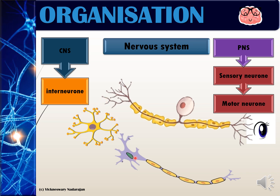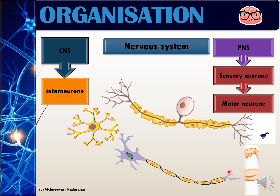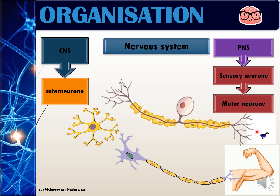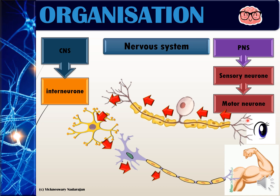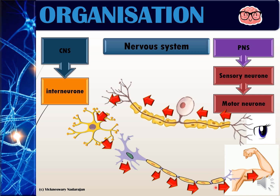Likewise, the motor neuron has dendrites closely connected to the interneuron, and on the axon terminal end it is connected to effector organs such as glands and muscles. How this works is that the eyes see a stimulus, an impulse is generated by the sensory neuron, transmitted across the interneuron into the motor neuron, and the motor neuron transmits the impulse to the effector organ for a response to occur.